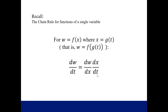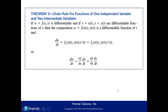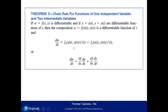Now we're going to extend this chain rule to functions of two variables — two intermediate variables and one independent variable. Here w is a function of x and y, the intermediate variables. If that function is differentiable, and the intermediate variables are differentiable functions of t, then the derivative of the composite function w can be found as follows: take the partial derivative with respect to x and multiply it by the derivative of x with respect to t, then take the partial derivative with respect to y and multiply it by the derivative of y with respect to t, and add those together.